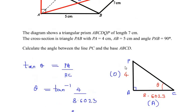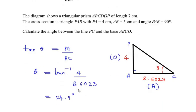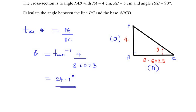This is the value of the angle made between the line PC and the base ABCD—that is 24.9 degrees. I hope you have understood all the steps.